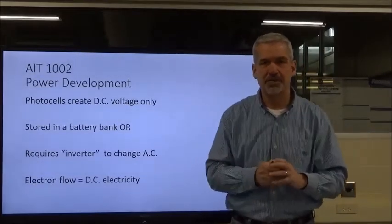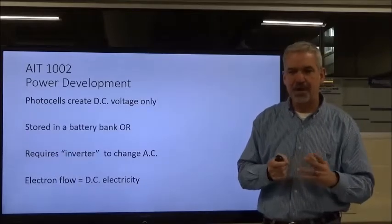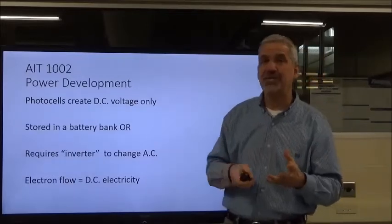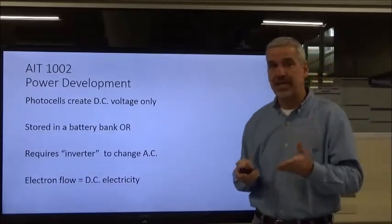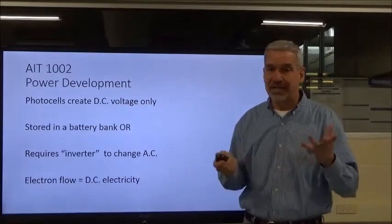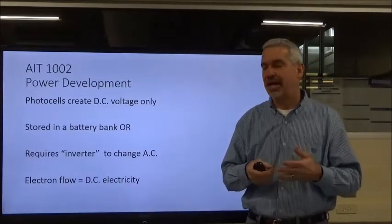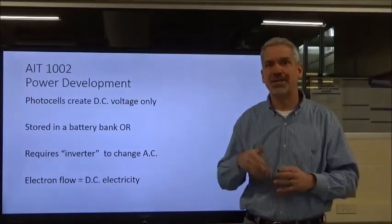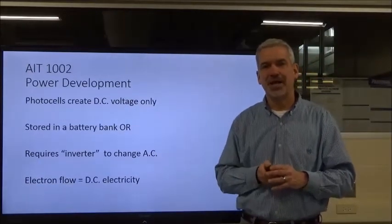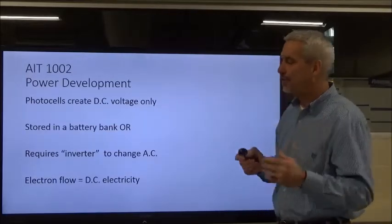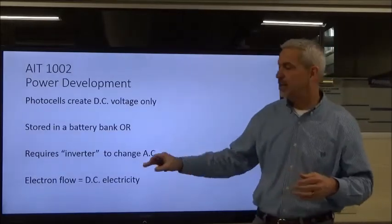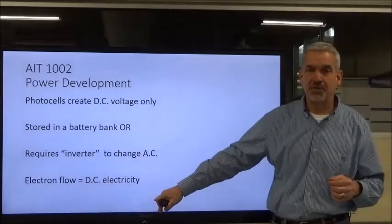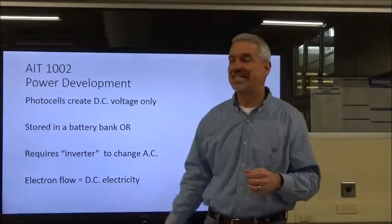Feeding solar power back to the grid lessens the amount of power you're charged for. I know a guy with solar panels on his house whose power bill runs roughly $11 to $14 a month. Right now there's some controversy because power companies want to penalize those using solar energy because they're not making as much money. But the voltage coming from solar panels — from photovoltaic sources — is DC.